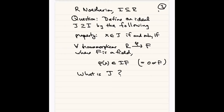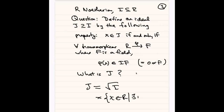I'll give you a second to think about it, especially the students. Anybody have a guess they want to give in the chat? Students only. Anybody brave enough? Bob suggests the radical of I. Exactly — very good. The nil radical of I. So J is actually the nil radical of I, which is the set of all X in R such that there exists an n with X to the n in I.